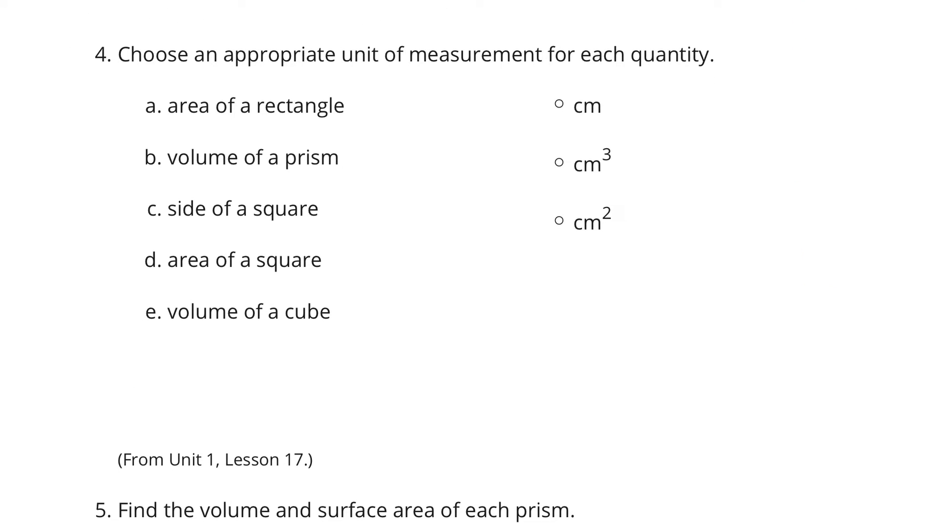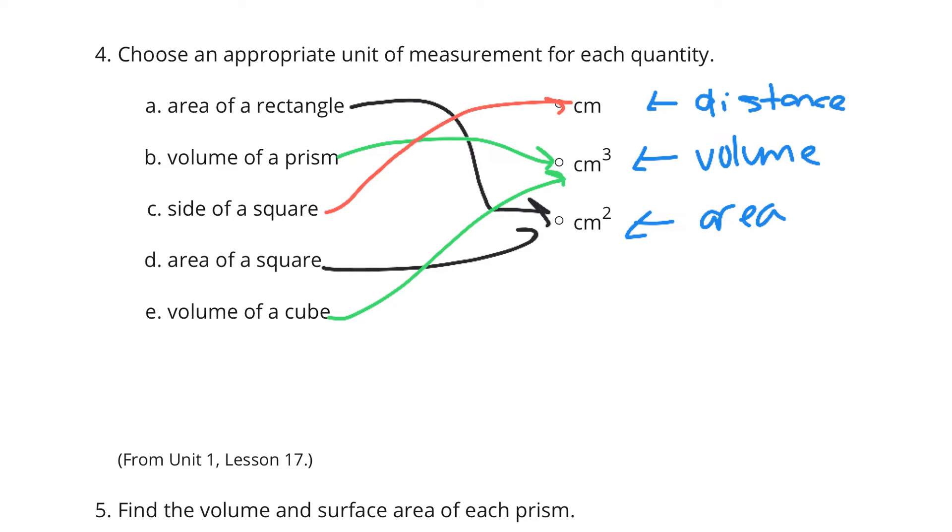Let's continue on. Question 4. Choose an appropriate unit of measure for each quantity. But before we do that, centimeter typically describes distances. Square centimeters typically describes area. And cubic centimeters typically describes volume. And so, when I'm looking for the area of a rectangle, that is going to be centimeters squared. Area of a square, centimeters squared. Now, volume of a prism, well, that's volume here. Volume of a cube is volume there. Which leaves us with side of a square, here as a distance of centimeters.